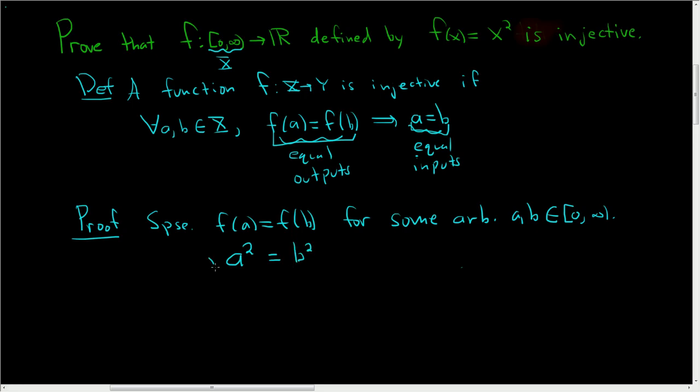So the natural thing to do next is take the square root of both sides. When we do that we get the absolute value of a equals the absolute value of b. But you'll notice that a and b are both greater than or equal to 0, because they're in this set here. So the absolute value of a is just a, and the absolute value of b is just b.